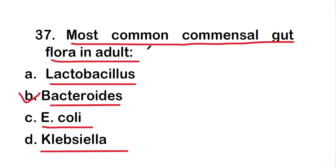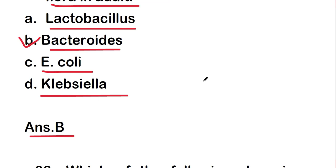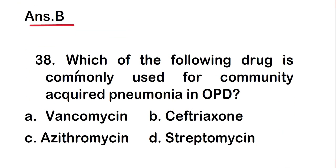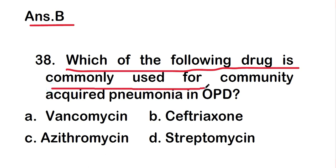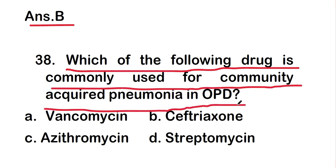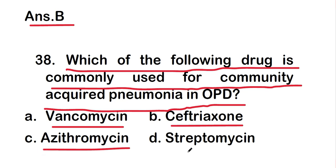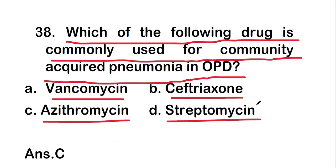Next question: which of the following drugs is commonly used for community acquired pneumonia in OPD? Options are vancomycin, ceftriaxone, azithromycin, or streptomycin. The right answer is option C — azithromycin is the drug commonly used for community acquired pneumonia in OPD.